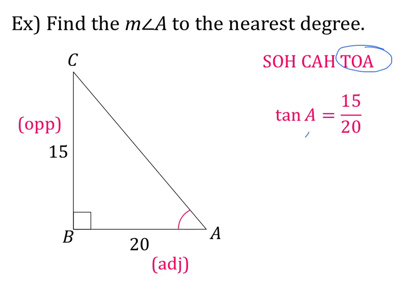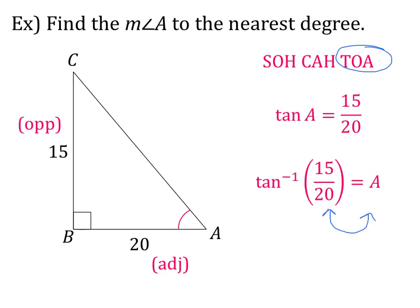Since we have opposite and adjacent, we're going to use TOA — tangent. Set it up: tangent of A equals 15 over 20. Since we're trying to find the angle and we have the ratio, they switch places and we use the inverse. So A equals tangent inverse of 15 over 20. On your calculator, press second, tangent, 15 over 20, close parentheses, and enter. Rounding to the nearest whole degree, the measure of angle A equals 37 degrees.